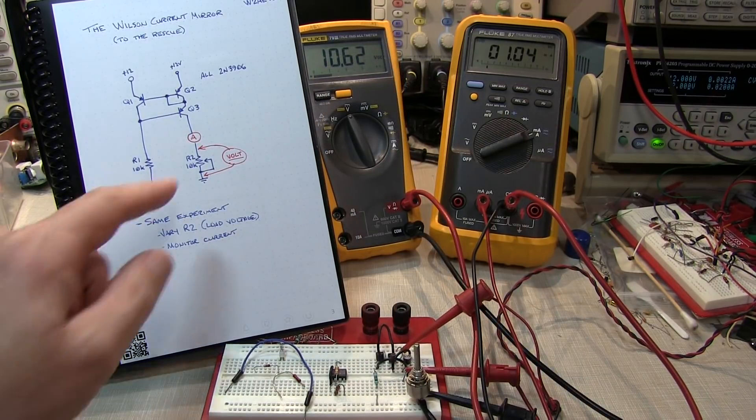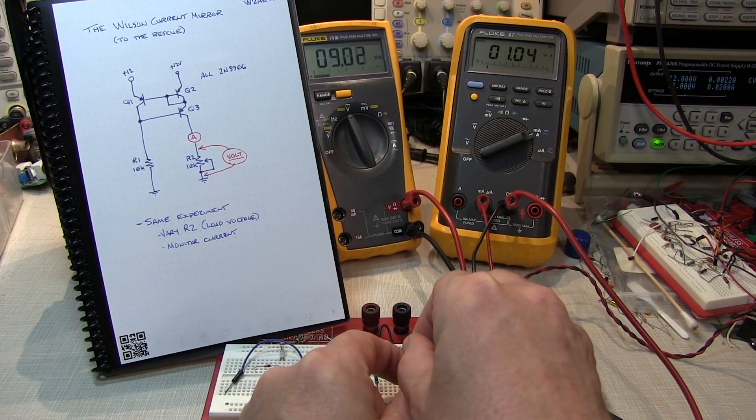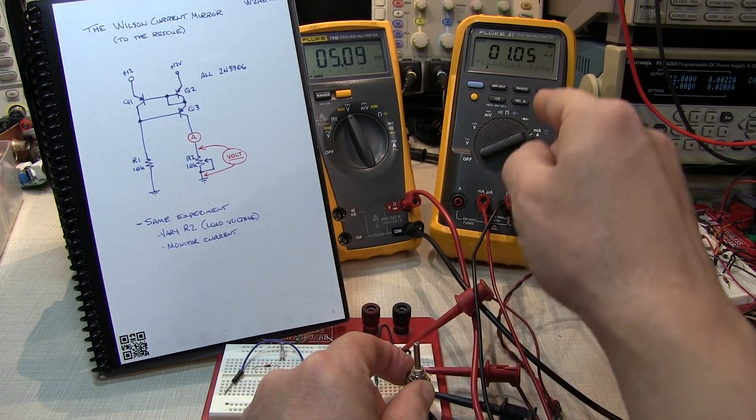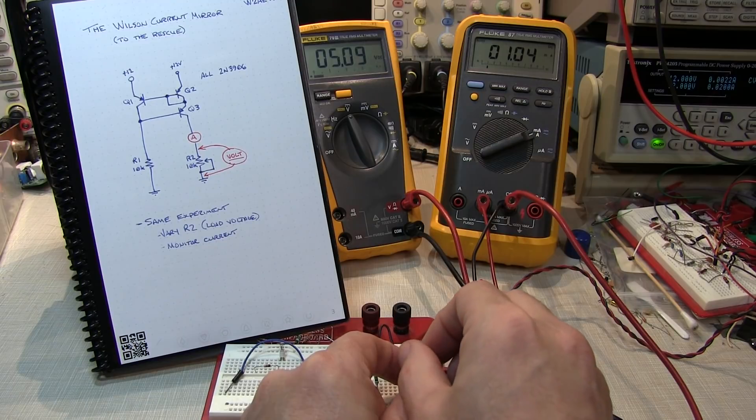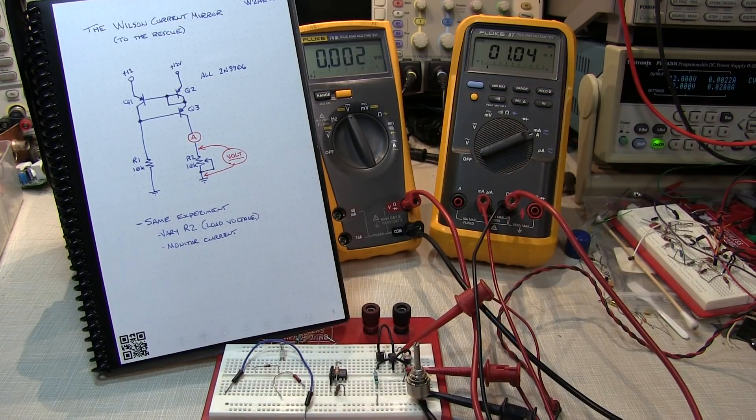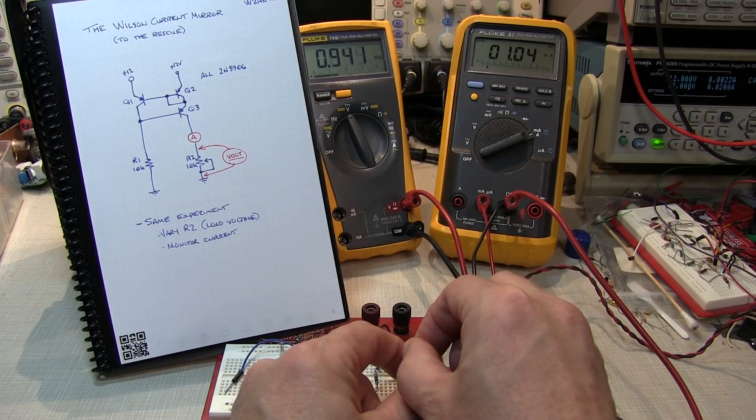Now let's start dialing down R2 and watch the voltage across R2 drop. So now I'm down to about 5 volts across the load resistor. I'm still looking at 1.04 milliamps. Let's keep going all the way down to 0. Even at 0 volts, I'm still at 1.04 milliamps.